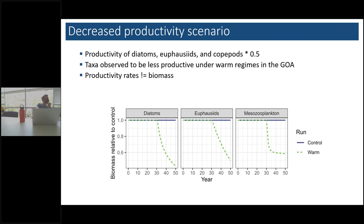For the productivity scenario: one of the things observed in the Gulf during recent warming events was that diatoms, krill, and some copepod taxa became less productive. One of the approaches in Atlantis is, after the 30 years of spin-up, to impose a scalar — reducing productivity rates for those groups. For example, slicing growth rates of these biomass pools by 50%. The biomass relative to the control keeps declining over time, but by the end of the study period is in a ballpark that makes sense with what was observed during the heat wave.